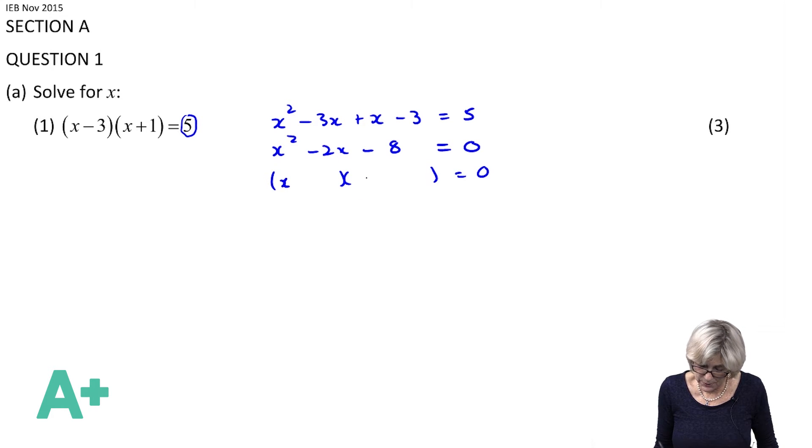You've got to think of two numbers multiply to give 8 and then subtract to give you 2. And I say it's 4 and 2, so I'm going to get -4 and +2. Because if you do your FOIL, you get -4x + 2x, you get -2.